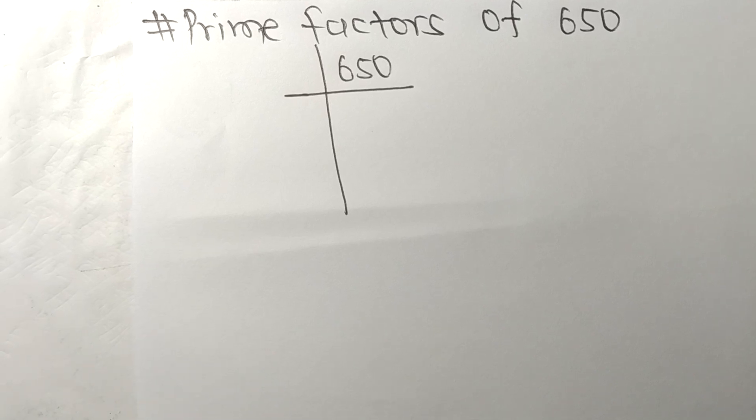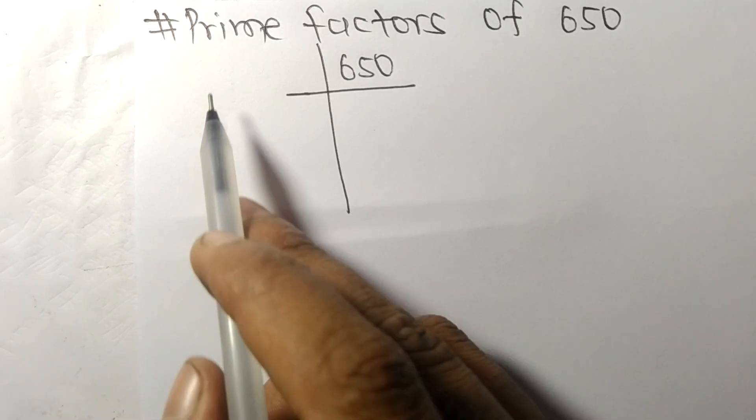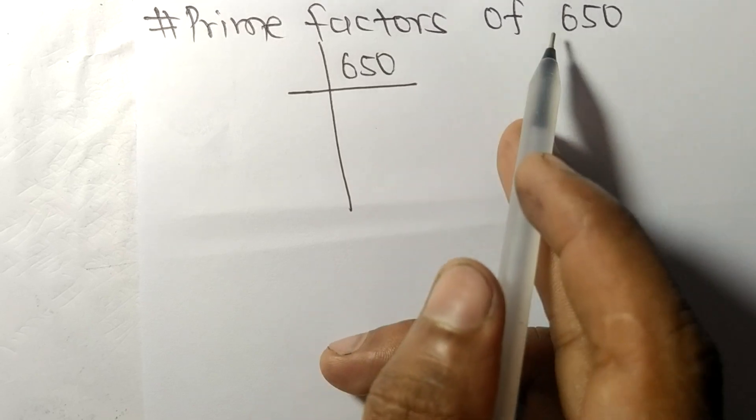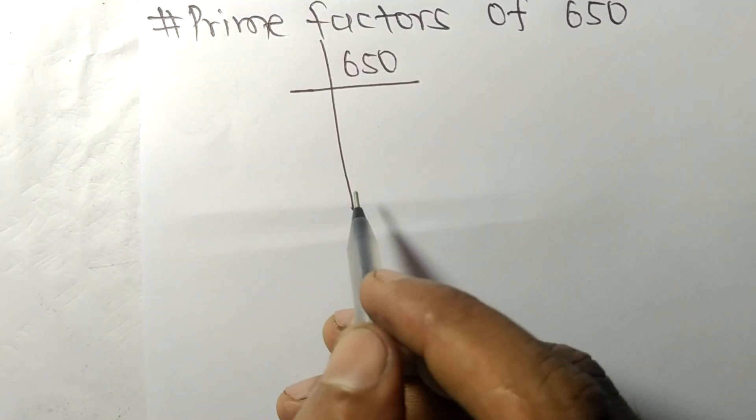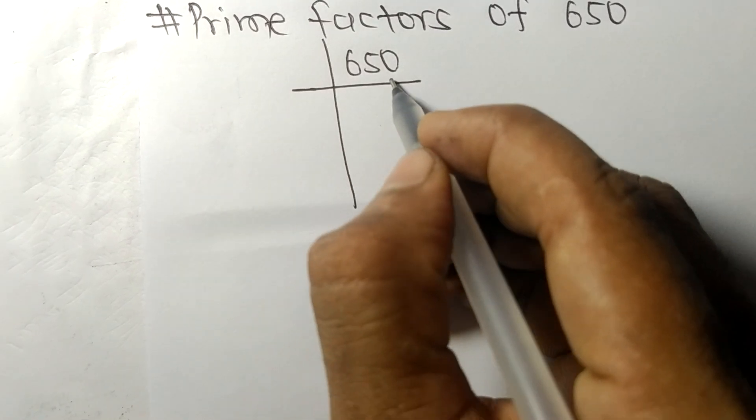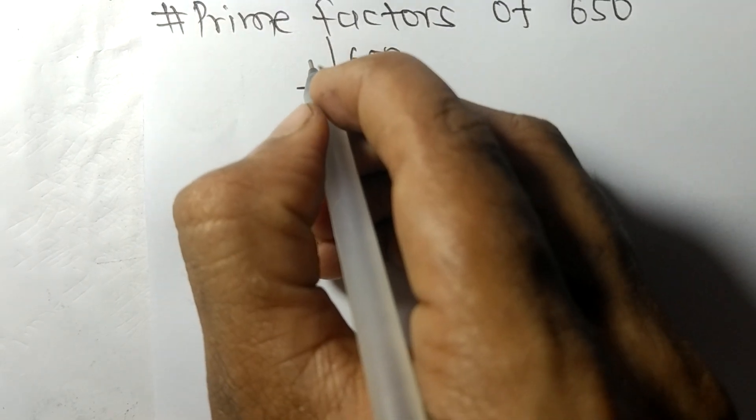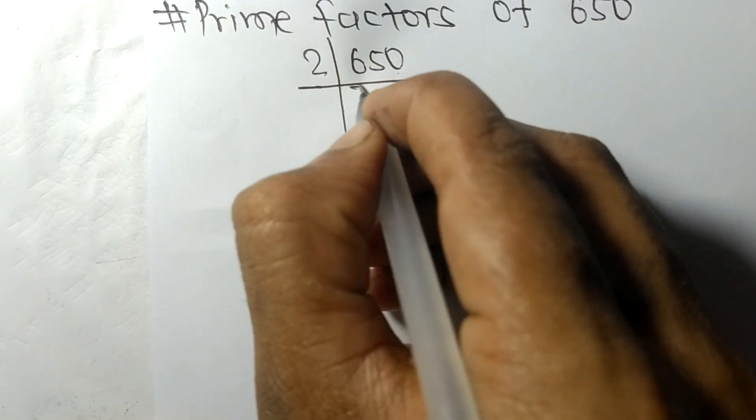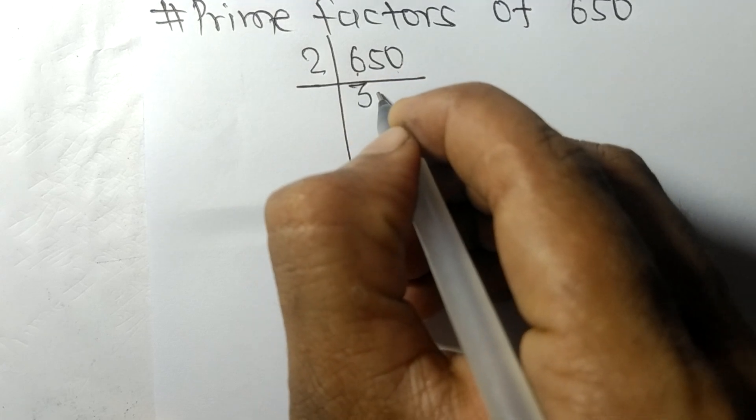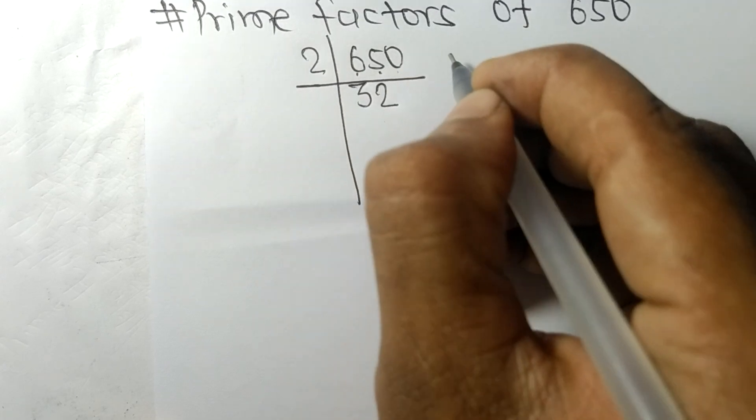Today in this video we'll learn to find the prime factors of 650. Since it ends in 0, it's divisible by 2. 2 times 3 equals 6, 2 times 2 equals 4, remainder 1 and 0.